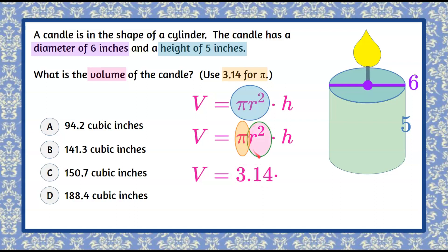Now we need to find r squared. r represents the radius. We weren't given the radius, we were given the diameter. Radius is from the center out to the edge. It's half the diameter. So half of 6 is 3. So radius is 3.